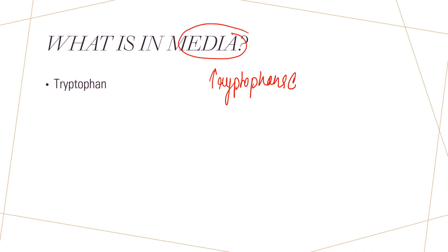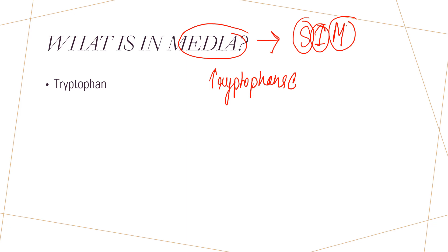For the indole test, we use the medium called the SIM medium. This is one of the very popular media for the indole test, where S stands for sulfur production, I stands for the indole test, and M stands for the motility test — so sulfur, indole, and motility.